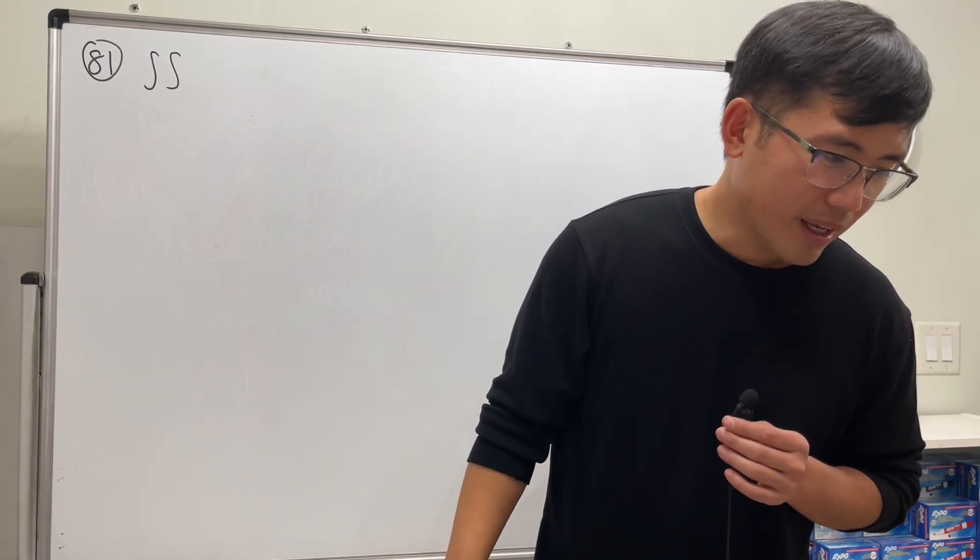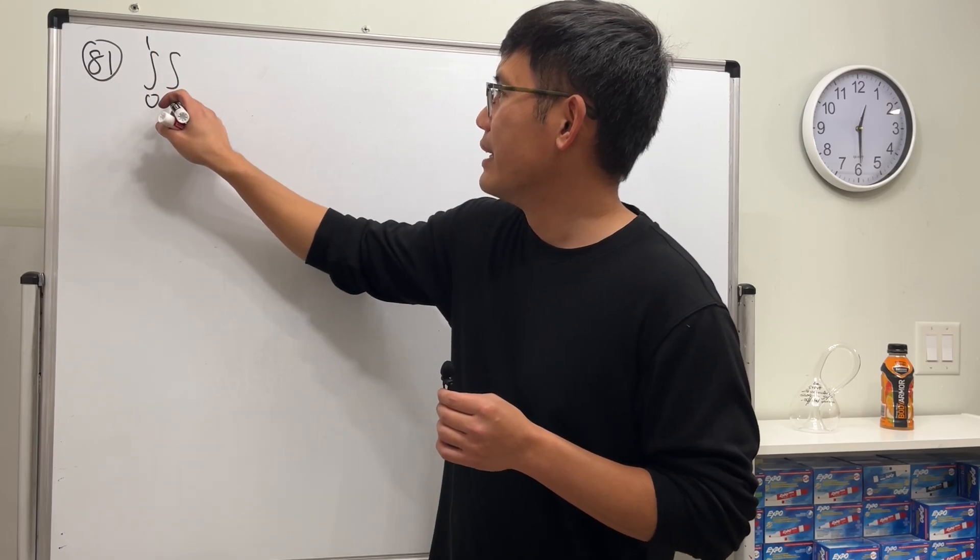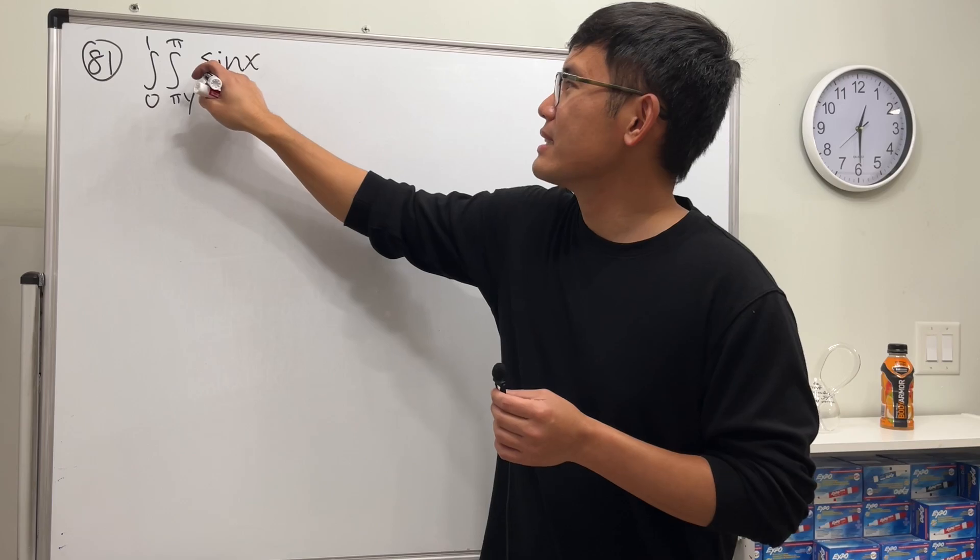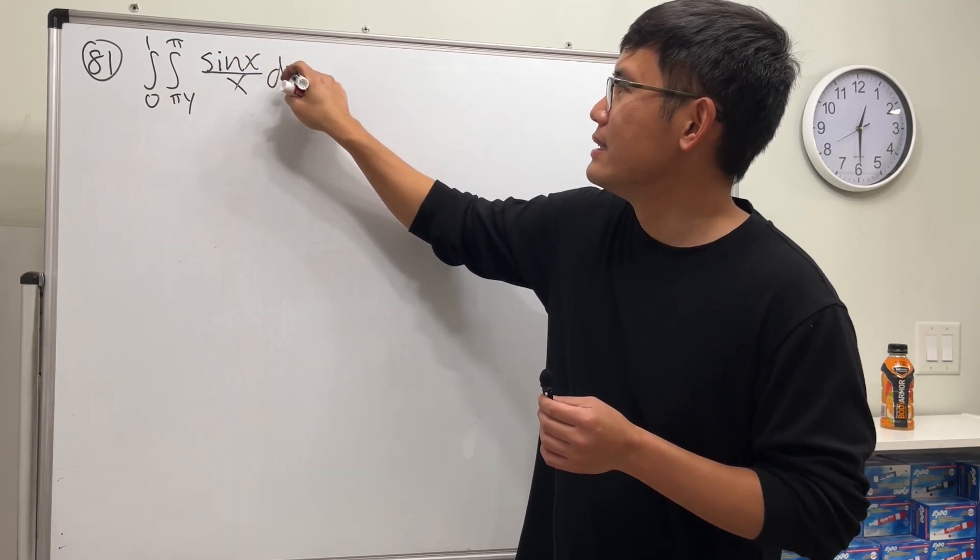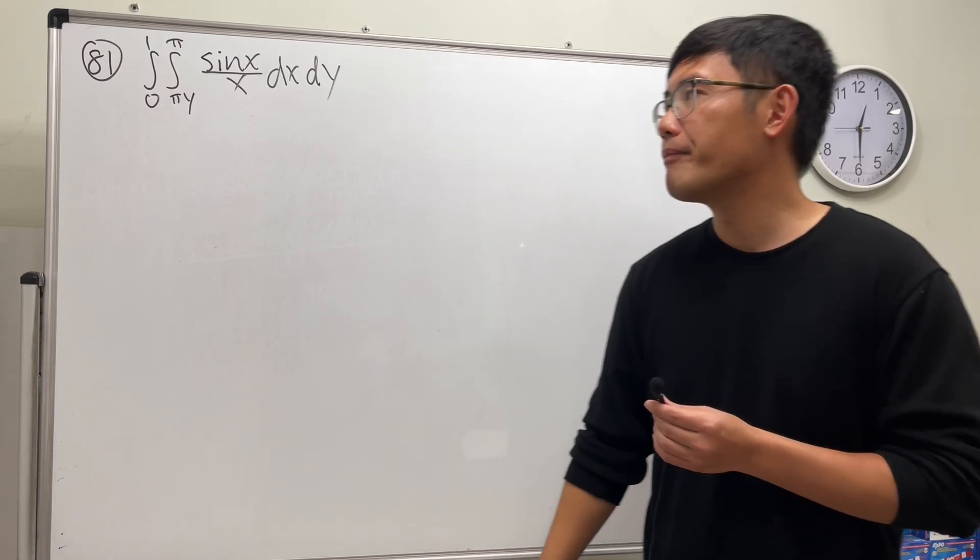We have a double integral where the first one is going from zero to one, and then the next one is π y to π, sin x over x dx dy. The problem with this is that we have this double integral with x going first, so let's try to change the order of integration.